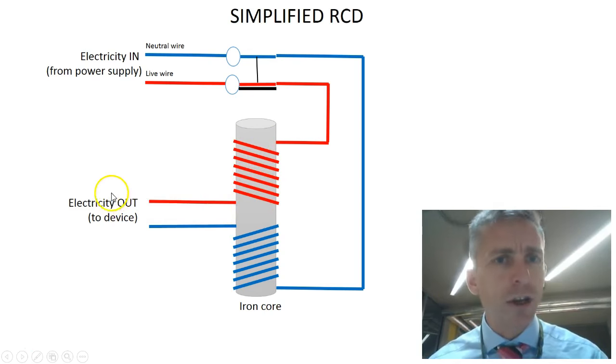And that goes out to the device. Now the device uses the electricity, or uses the energy supplied with electricity, but the current returning through the neutral wire should be the same as the current supplied. But the coil there is wired the other way around. And so this produces a magnetic field that's reversed, the opposite to the input coil.